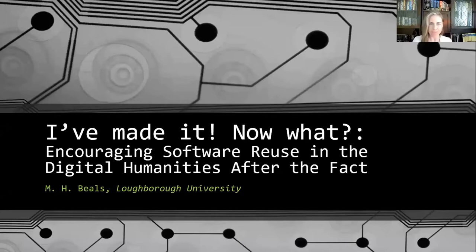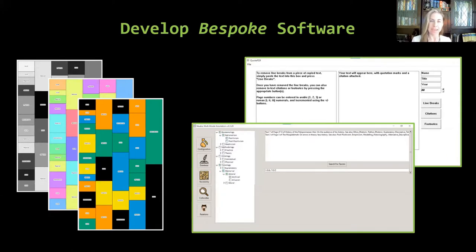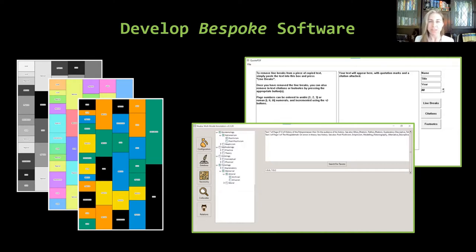Thank you very much. I wanted to talk about reuse in the humanities in terms of software after the fact — after you've already created your software and you decide, hey, maybe this should be reusable as opposed to just existing within my own project. How do you retroactively do that? The first thing I want to put across is that I am actually a very big advocate for developing bespoke software. There is a big temptation to always develop software that you know is going to be reusable, going to solve all the problems in your field or across humanities.